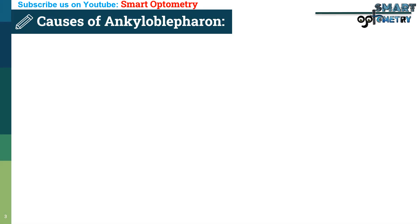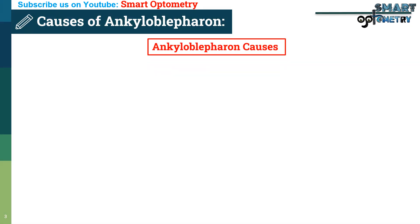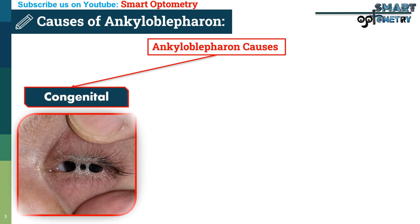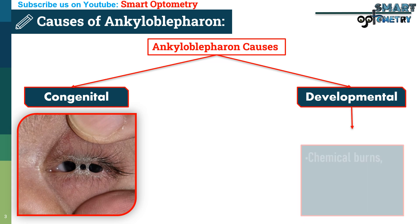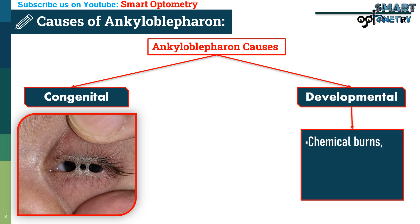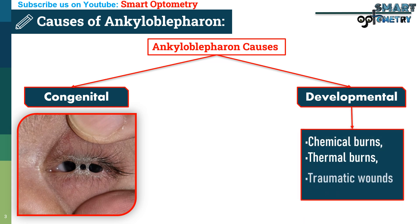What are the causes of ankyloblepharon? It can occur as a congenital anomaly, meaning it is present at birth, or develop later due to injuries such as chemical burns, thermal burns, traumatic wounds of the lid margins, and ulcers that heal improperly.